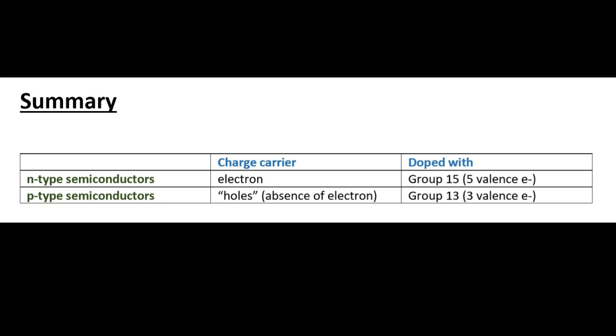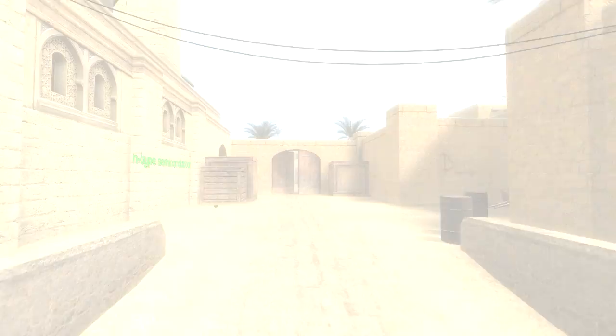And in summary, the IB wants you to know what are the charge carriers in the n and p-type semiconductors. Well, in the n-type the charge carriers are electrons, and in the p-type it's these holes, which is a lack or an absence of an electron.